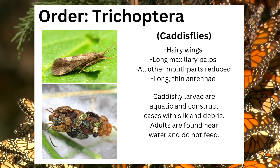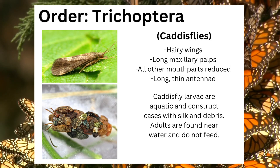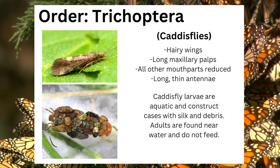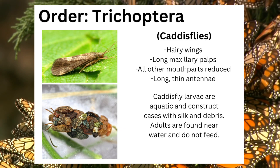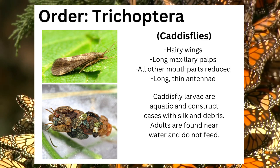The final insect order covered today is Trichoptera, also called the caddisflies. They can be identified by their hairy wings, their long maxillary palps, their lack of other mouthparts, and long thin antennae. Caddisfly larvae are aquatic and construct cases with silk and debris. Adults are found near water and do not feed.